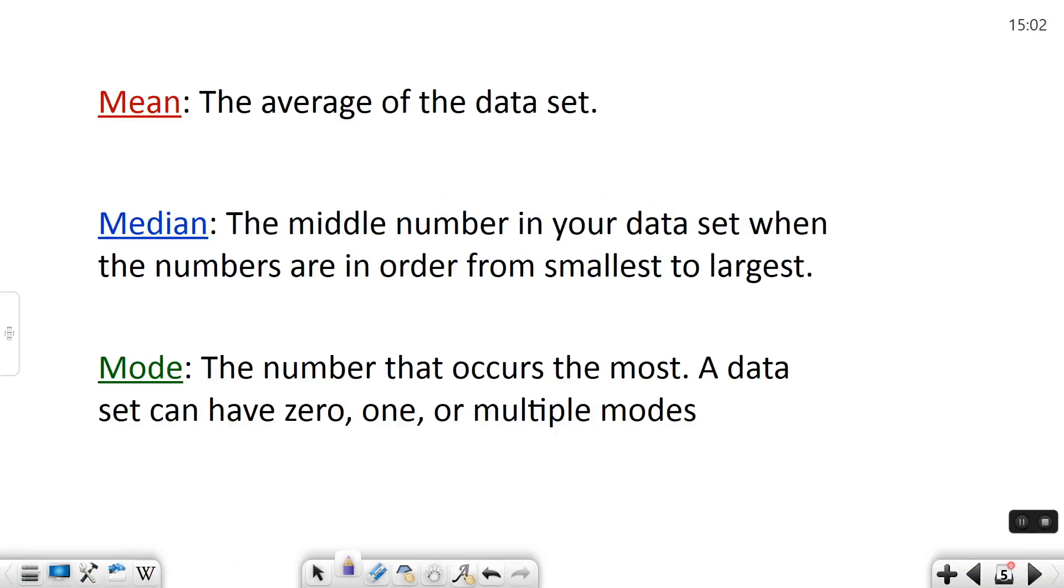So the mean of a set of data is basically the average of that set. What you do is you add up all the numbers and divide by however many there are.